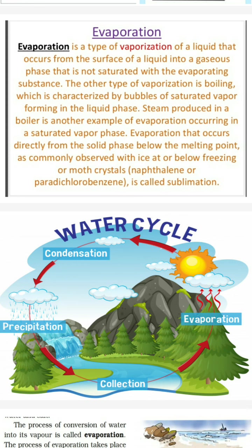In the water cycle, what happens? The water droplets collect by the process of evaporation, then change again by the process of condensation and precipitation. Sabse pahle jo sun hai, wo water ko heat karta hai. Heat karne ke baad, water jab heat hota hai, to water vapors mein change hota hai.